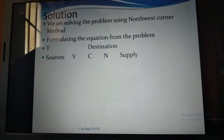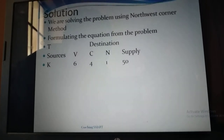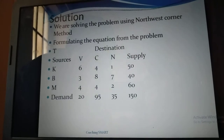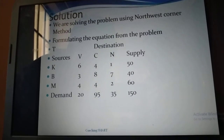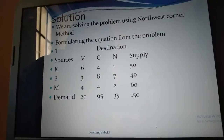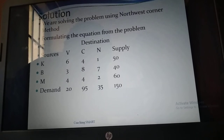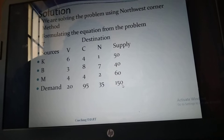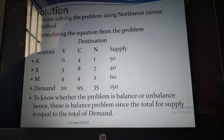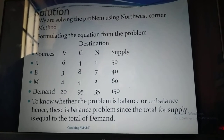In our North West Corner Method, this is the formulation of the equation for the problem. We have destination and source: Kasarani supply is 6, 2, 4, 1, with supply 50; Buziga is 3, 8, 7 with supply 40; Meru is 4, 4, 2 with supply 60. Demand is 20, 95, 35. Now we need to check if the equation is balanced. The total supply must equal total demand — and in this problem it is balanced.